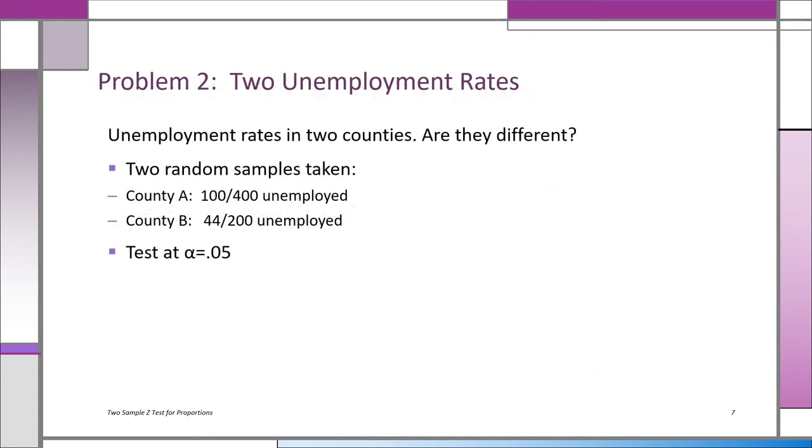In problem two, we're comparing two unemployment rates: the unemployment rates for county A and for county B. Remember, a rate is just a proportion, and if we're comparing two proportions, we're asking the question, are they really the same? Are they just two different samples taken from the same population, or are they statistically different? We're going to test that at alpha equals 0.05, just to keep things simple.